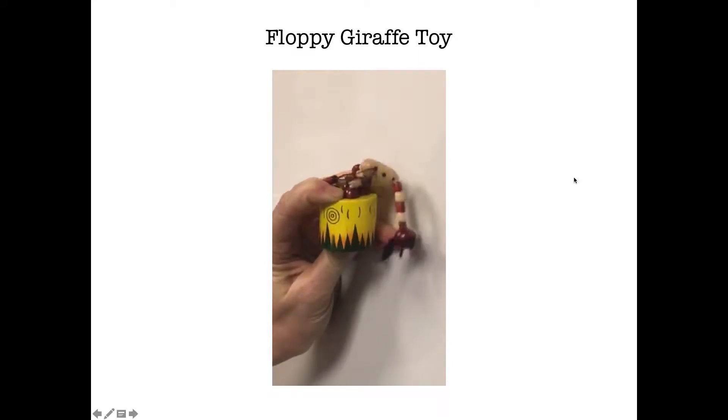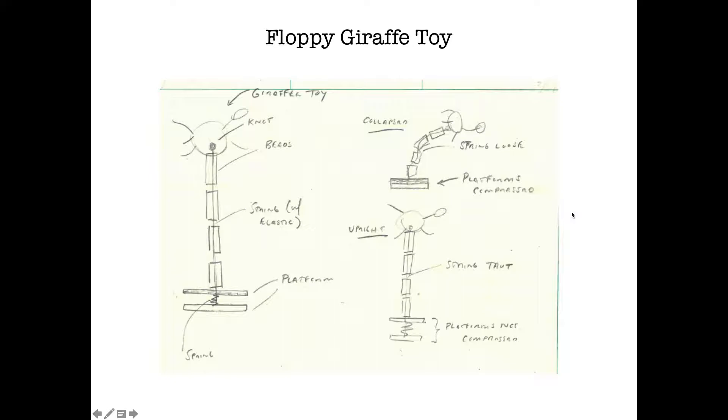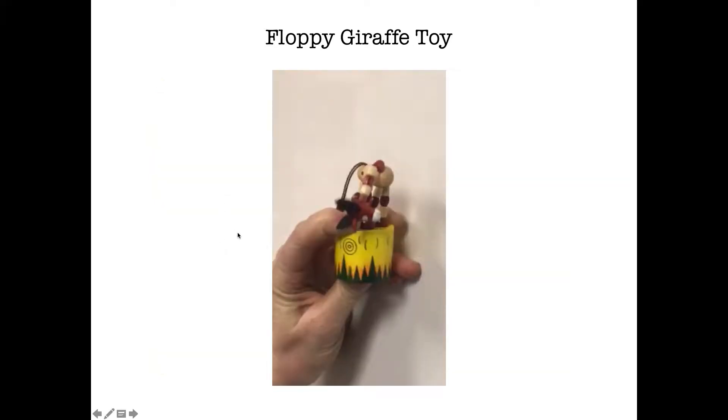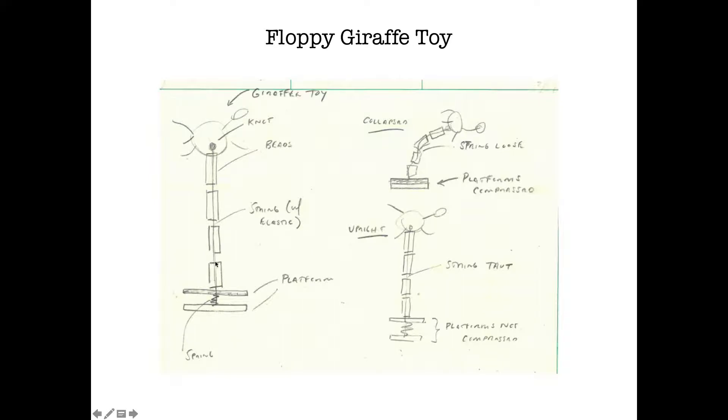All right so let's see what I did on this one. Floppy giraffe toy. This is a really interesting toy. There's a whole series of these and the way that it works is basically there are some beads that are strung together and they're like the legs of the giraffe or some part of the body, but it's all connected together with a string that goes through beads and then that is tensioned via a spring in a platform. So when you're pressing on the bottom you're actually compressing the spring and you're loosening the tension on this string which then causes all these beads to collapse. So I'm trying to communicate that idea.